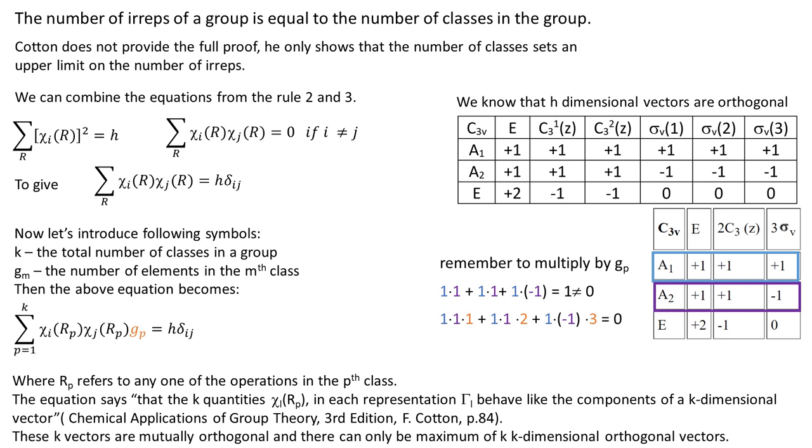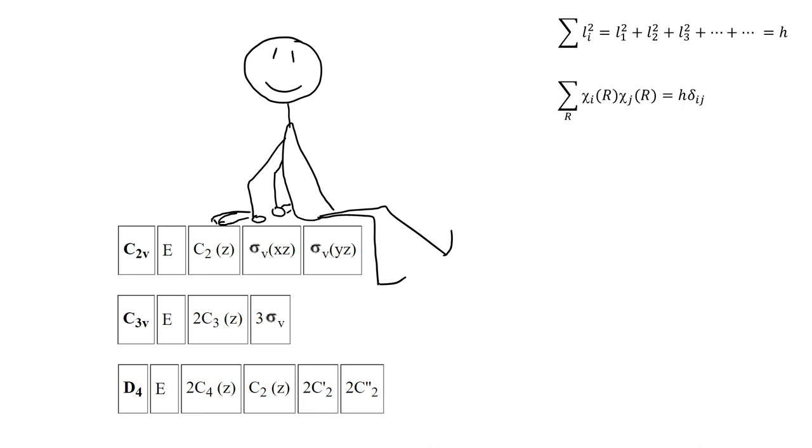So we are done. Now it would be good to do some examples but I run out of time so we will do them in the next video. If you like you can have a go at the questions now and check the answers in the next video. The task would be to construct the rest of the character table for these three groups knowing only operations and the number of classes. So see you in the next video.